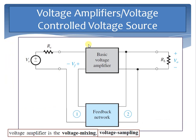The first is the voltage amplifier, also called the voltage-controlled voltage source. Voltage amplifiers amplify an input voltage signal and provide an output voltage signal. The input resistance required is high and the output resistance required is low, which are desirable properties. The most suitable feedback topology for voltage amplifiers is voltage mixing and voltage sampling.